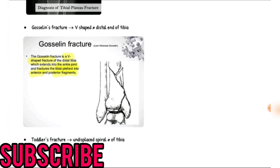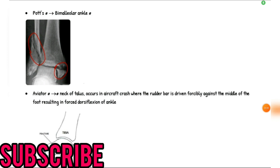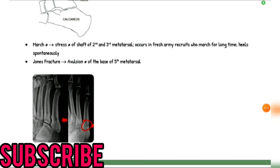Next is the Gosselin's fracture: V-shaped fracture of the distal end of the tibia. Toddler's fracture: undisplaced spiral fracture of the tibia. Pott's fracture: bimalleolar ankle fracture. Aviator fracture: fracture of the neck of the talus, occurs in aircraft crash where the rudder bar is driven forcibly against the middle of the foot resulting in forced dorsiflexion of the ankle. March fracture: stress fracture of the shaft of the second and third metatarsal, which occurs in fresh army recruits who march for long time — heals spontaneously. Jones fracture: avulsion fracture of the base of the fifth metatarsal.